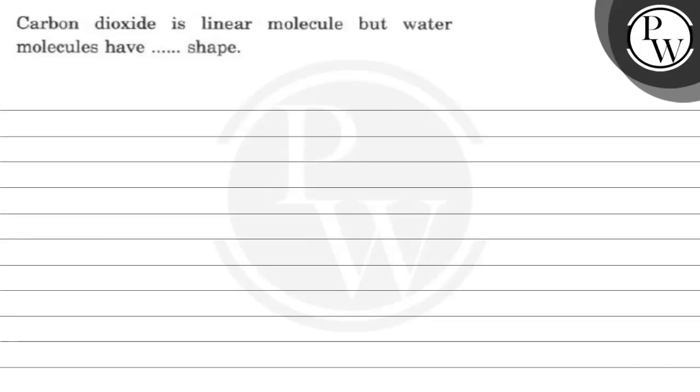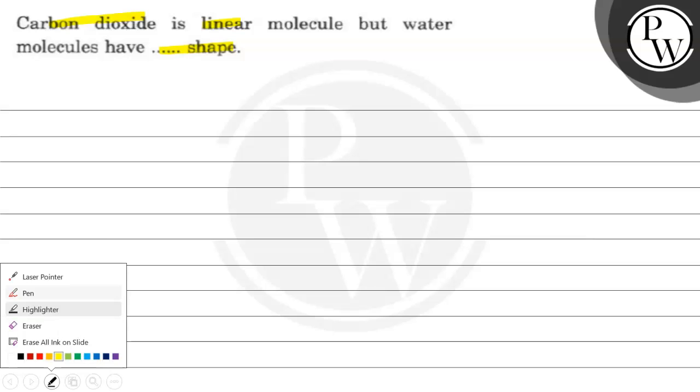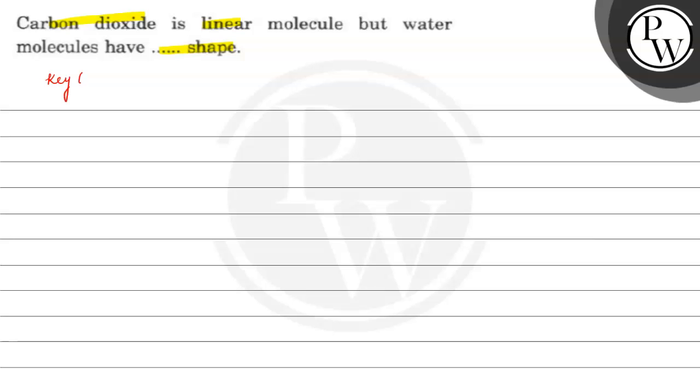Hello, let's read this question. The question says carbon dioxide is a linear molecule but water molecules have dash shape. Before starting this question, this is a fill-in-the-blank question and we should know what is the key concept to solve it.